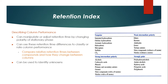The retention index can be used to describe column performance. You can manipulate or adjust retention time by changing the polarity of the stationary phase, and use retention time differences to classify or rate column performance. Comparing relative retention times between compounds and how they change between columns can also be used to identify unknowns.